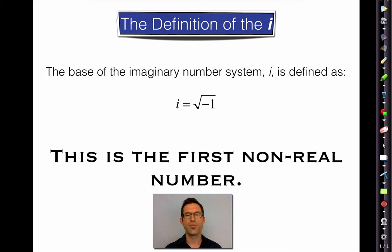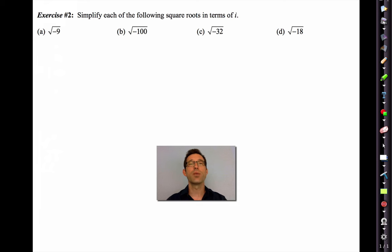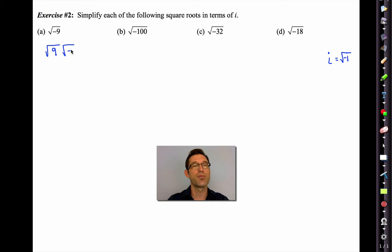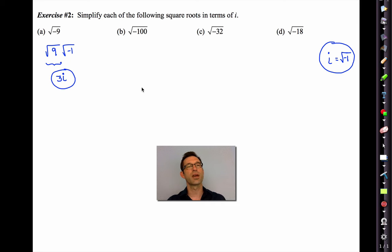This is the first non-real number you've ever seen, and it can't be real because you can't take the square root of a negative number with real numbers. So let's play around with it. Once we know that i equals the square root of negative one, we can start simplifying square roots of negative numbers. Up till now, if I gave you the square root of negative nine, you'd say those don't exist. But now we can break it up as the square root of nine times the square root of negative one. The square root of nine is three, and the square root of negative one is i. So the square root of negative nine is 3i.